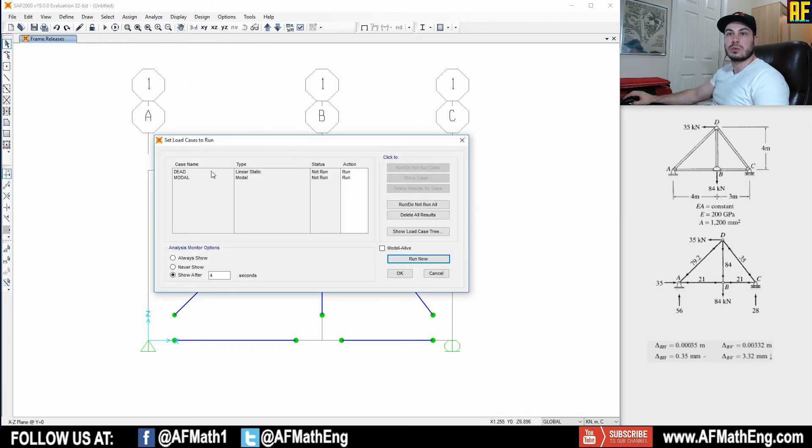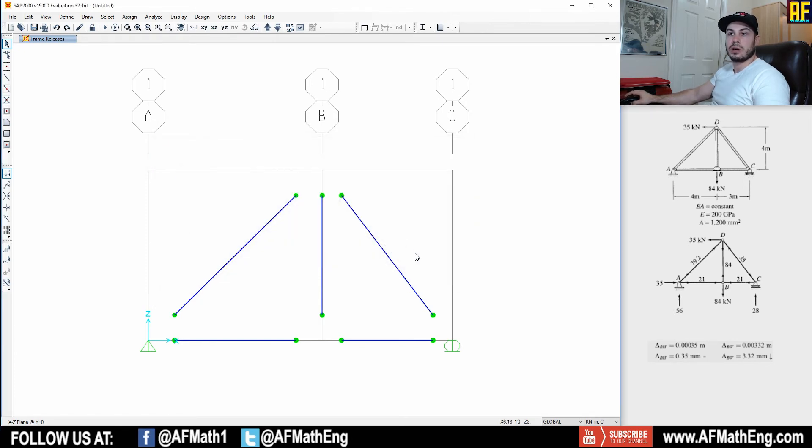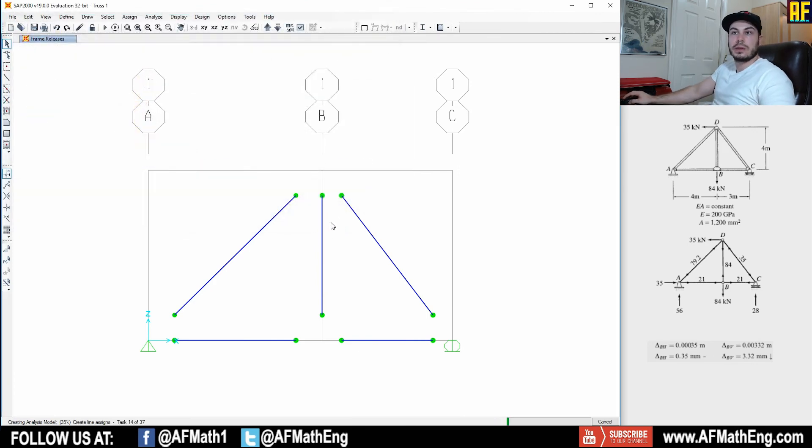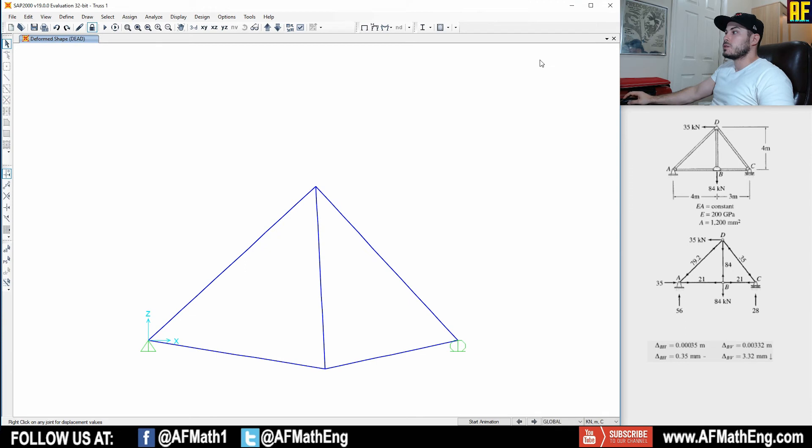So we're going to go to analyze and we're going to run this analysis. We're not going to run a modal analysis. We're only going to run our dead load analysis. So our linear static analysis, we're going to run now and let's go ahead and relabel this, rename it, whatever. Save it. And as you can see, we now have our deflected shape here of our truss, and we can go ahead and start to analyze.